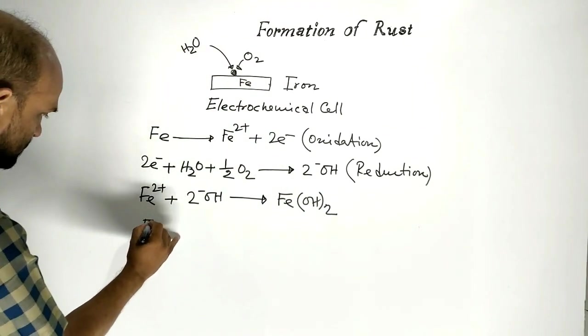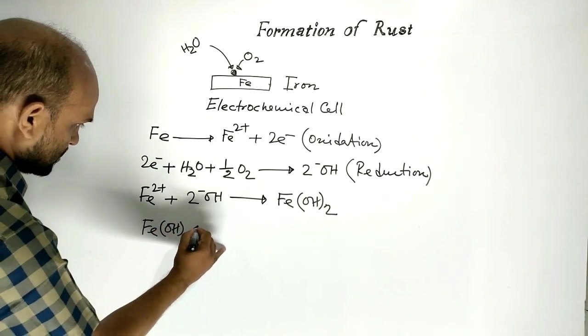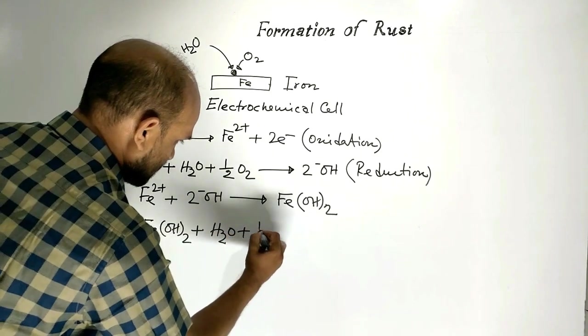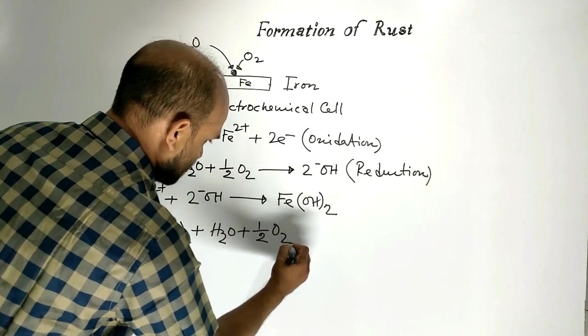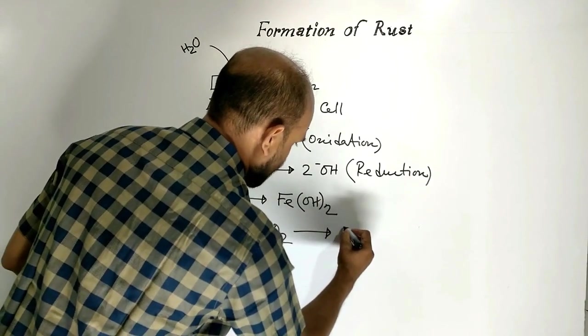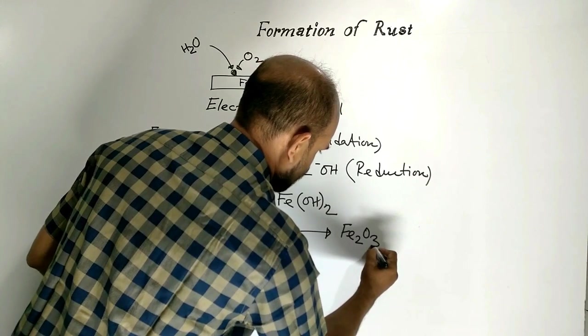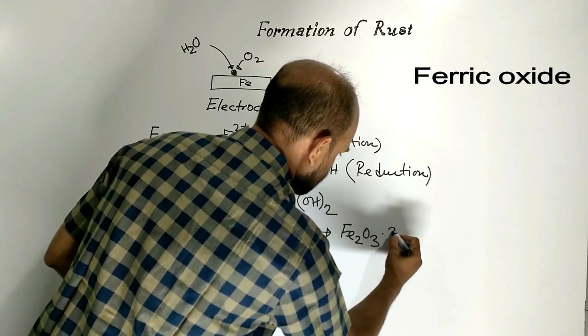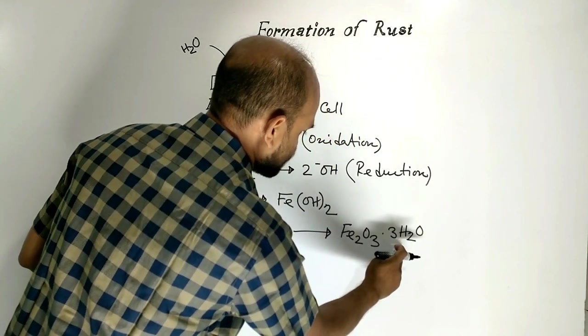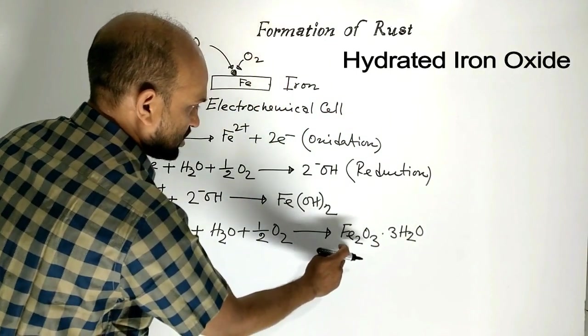This ferrous hydroxide combines with water and half moles of oxygen to form this compound. Ferric oxide with three molecules of water. This is hydrated iron oxide,